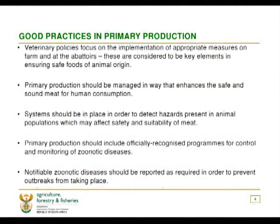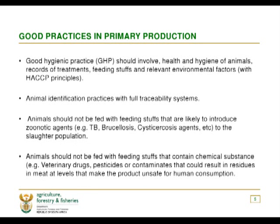Primary production should include officially recognized programs for control and monitoring of zoonotic diseases, such as sanitation programs on farms. Notifiable zoonotic diseases should be reported as required in order to prevent outbreaks. Good hygiene practices should involve health and hygiene of animals, records of treatment, feeding stuffs, and relevant environmental factors. Where HACCP is implemented, HACCP principles must be considered as well.